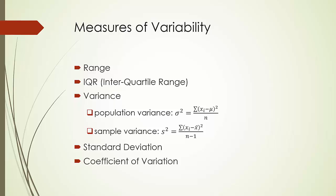The other key difference is the denominator in the formulas: n versus n minus 1, where n is the size of the dataset. Technically, the denominator in the variance formula is the degree of freedom of the data. When it is about a population, the degree of freedom is n. When it is about a sample, the degree of freedom is n minus 1. I'm going to provide a simple and hopefully understandable explanation of degree of freedom. We will see much more about degree of freedom in future topics such as ANOVA and regression analysis.